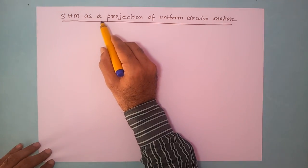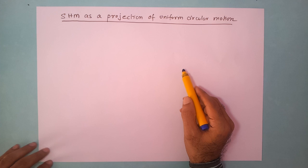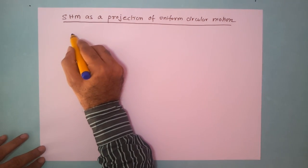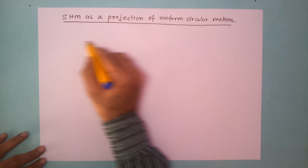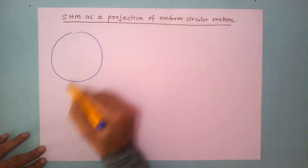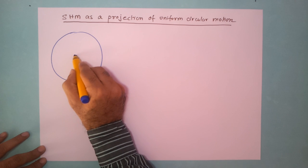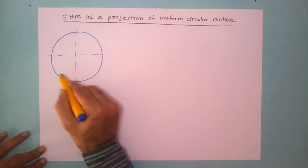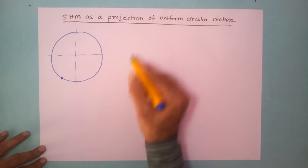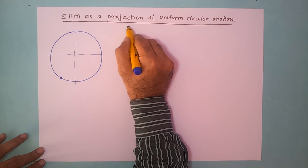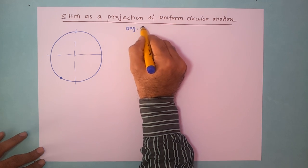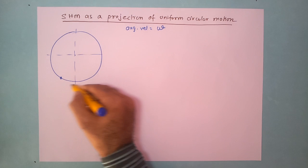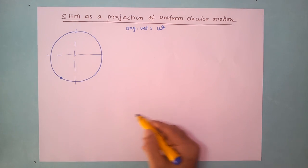In this video we will look at simple harmonic motion as a projection of uniform circular motion. Let us say we have an object performing uniform circular motion with a constant angular velocity omega.